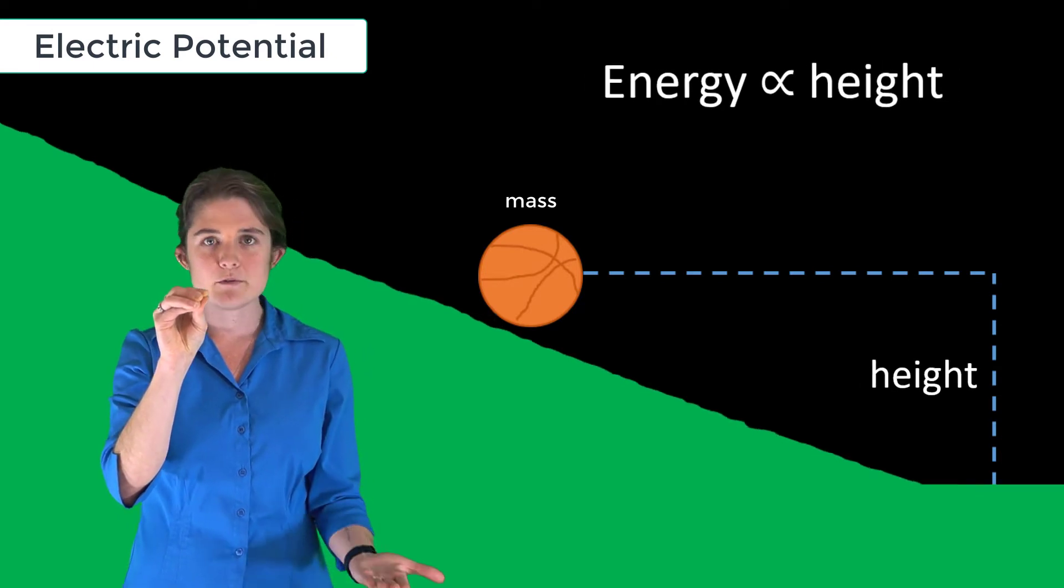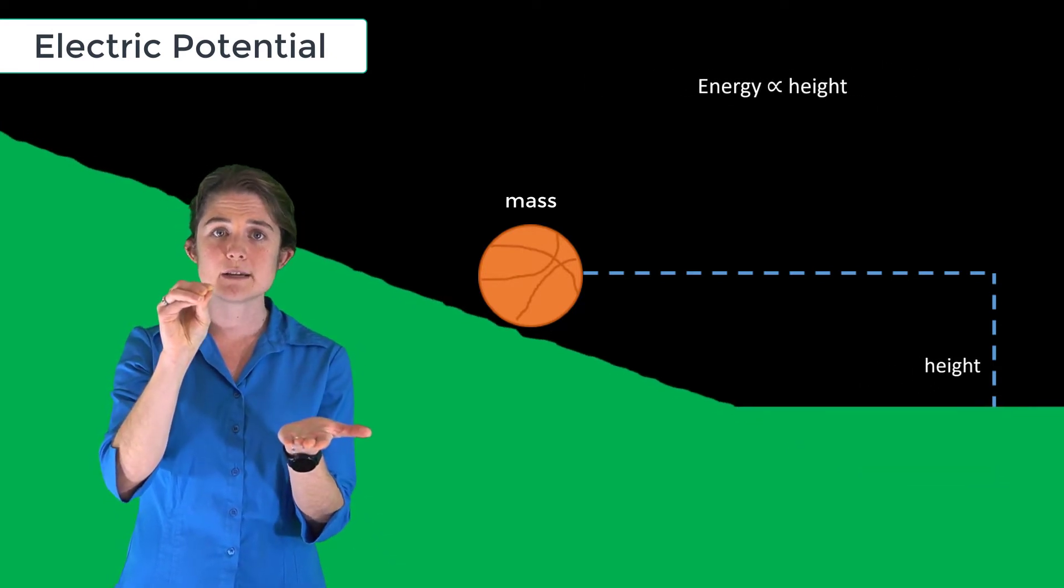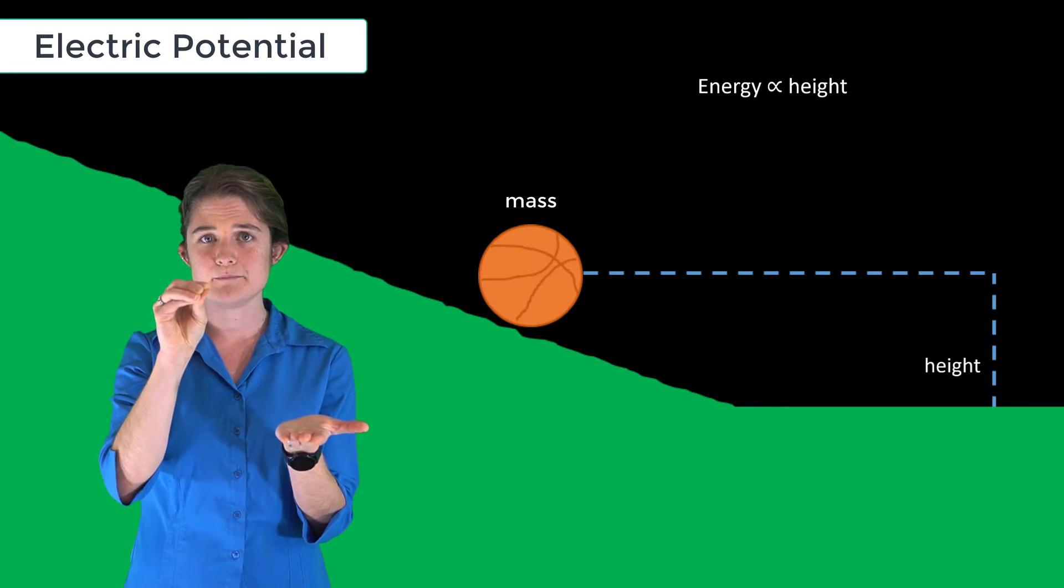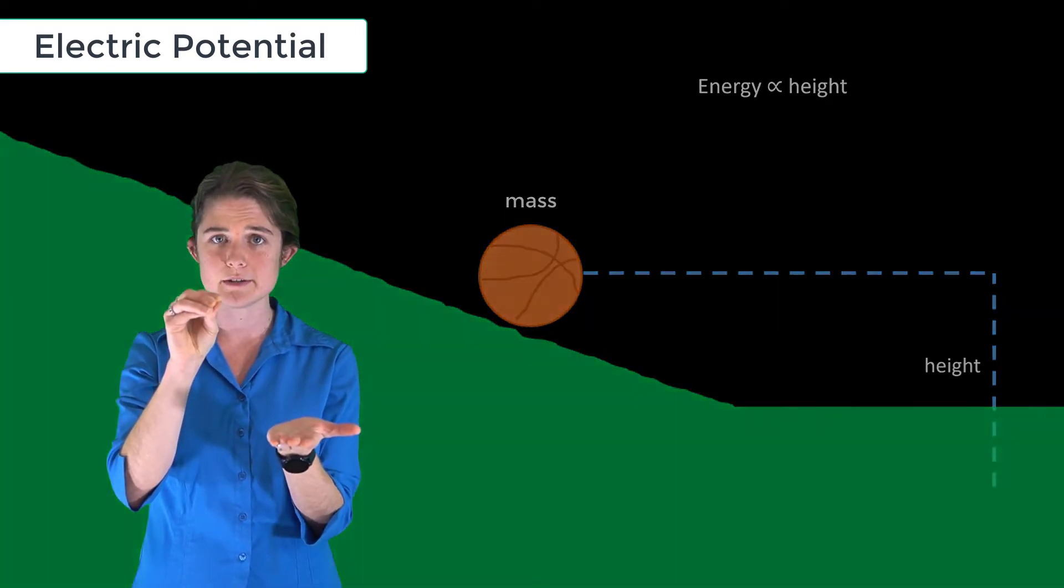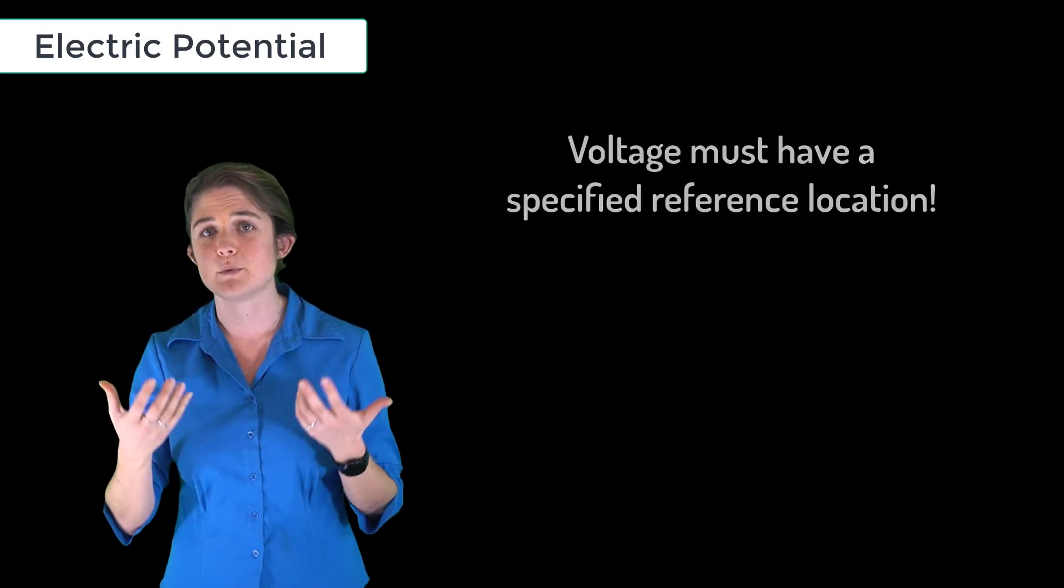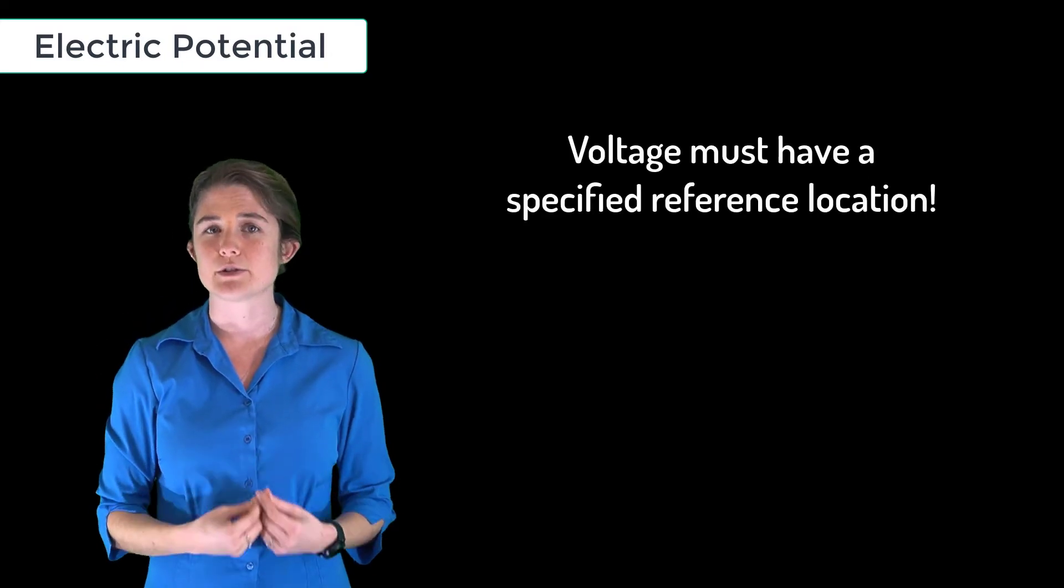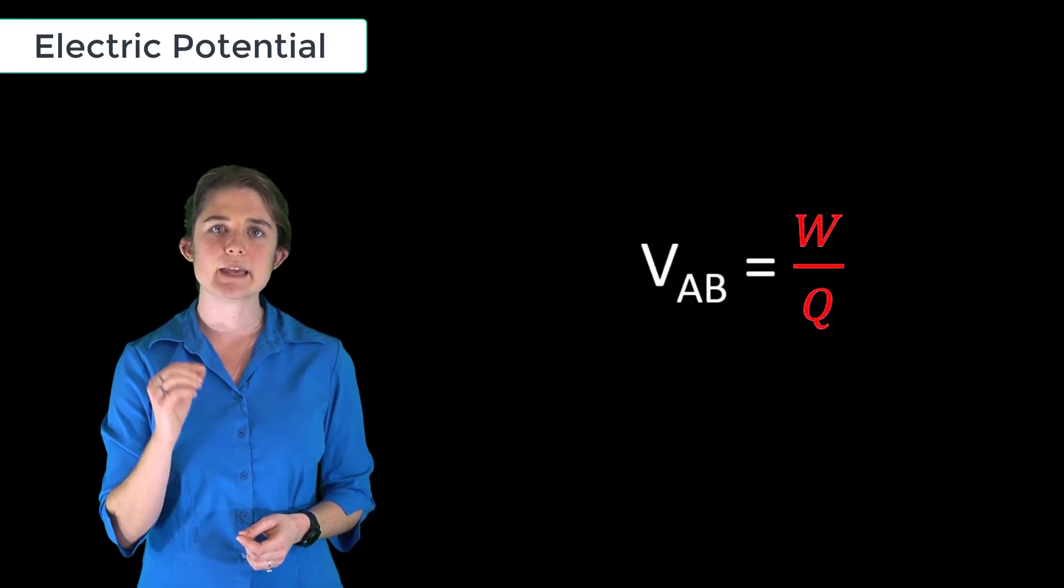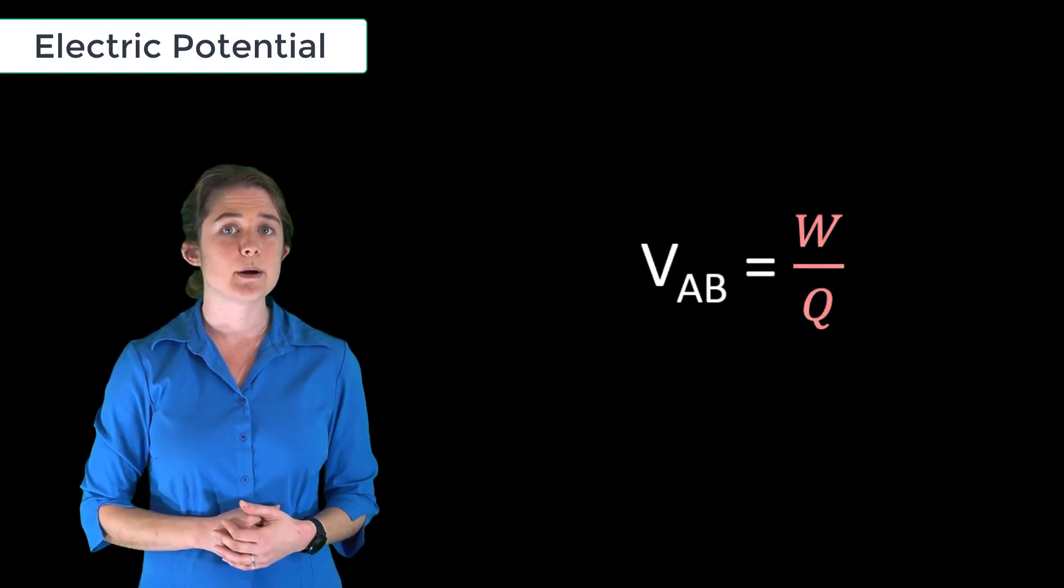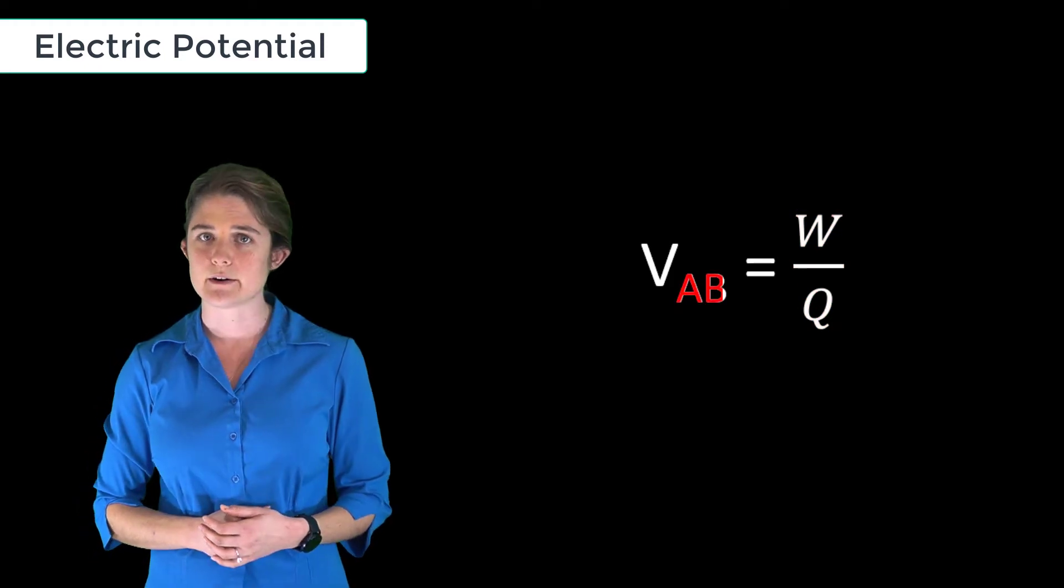If we move the bottom of the hill up, the basketball would lose potential energy. Potential energy only makes sense when measured from some reference location. Similarly, when we talk about voltage, we must always specify a reference location. Voltage is defined as the energy per charge gained by moving from one location to another within an electric field.